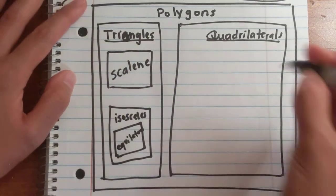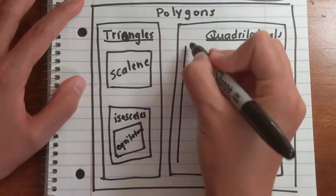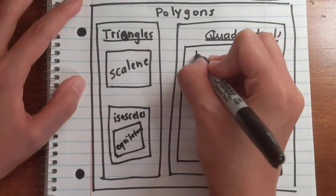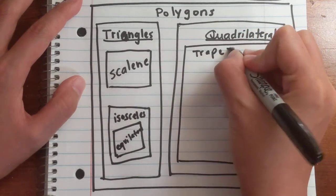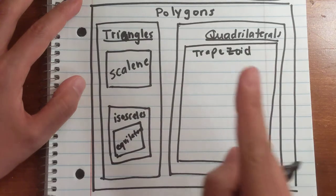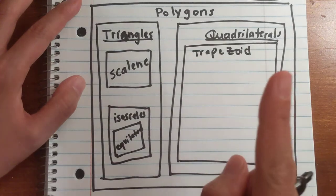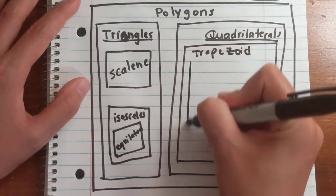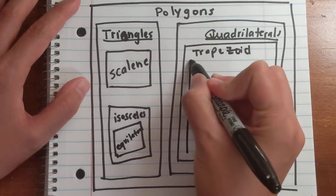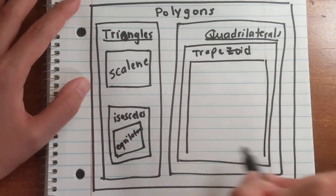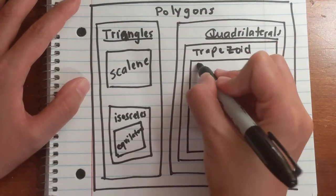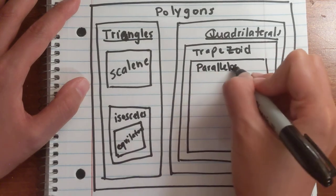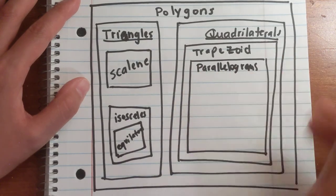Let's look at quadrilaterals. Getting more specific with quadrilaterals brings us to trapezoids. A trapezoid has at least one pair of parallel sides. Get more specific and you'll get to parallelograms — that's two pairs of parallel sides.